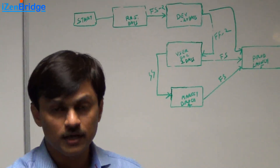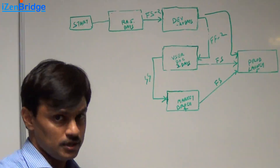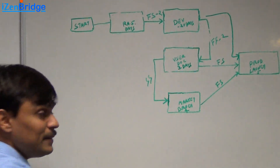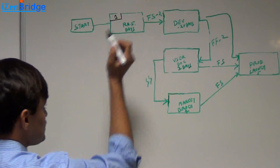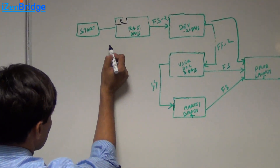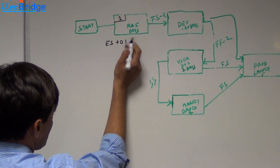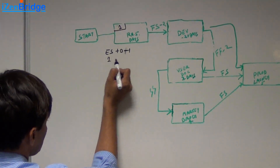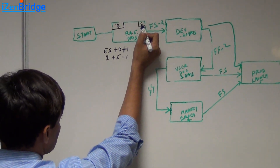Let's calculate the early start, early finish, late start, and late finish dates of these activities. For requirement analysis, we are starting on day 1. Since it is taking 5 days, the early finish is early start plus duration minus 1, which is 1 plus 5 minus 1 — so we are finishing on day 5.